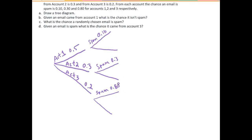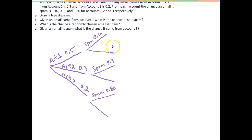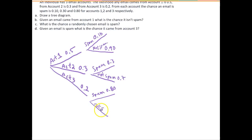Now if we want to know whether an email is not spam given it came from a certain account, all we have to do is fill in the rest of these branches. So this is going to be 0.90 for not spam from account 1, 0.70 for not spam from account 2, and not spam if it came from account 3 is equal to 0.20.